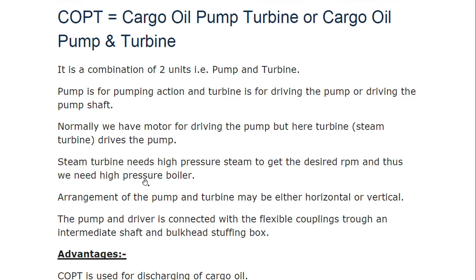On ships which have COPT, they have two boilers — one specifically for the Cargo Oil Pump Turbine. The steam turbine needs high pressure steam to get the desired RPM, and thus we need a high pressure boiler. We have basically three types of boilers: low pressure, medium pressure, and high pressure. To drive the turbine of the COPT, what we need is a high pressure boiler.